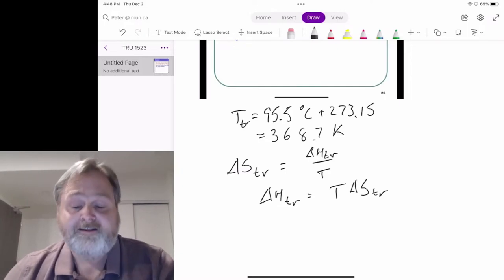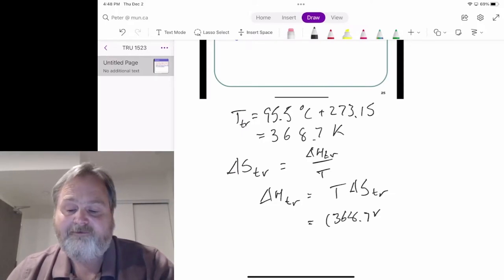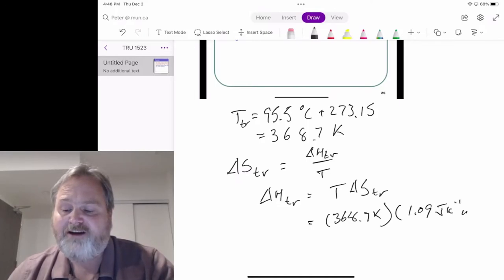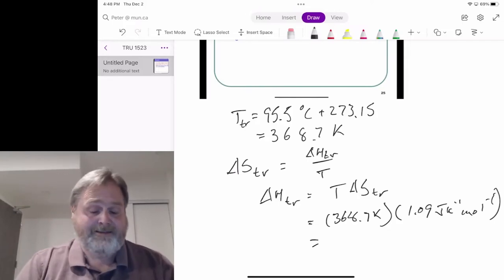But for now, let's just solve the problem. That is going to be our 368.7 kelvin. Multiplied by the 1.09 joules per kelvin per mole for the entropy change for that transition. Again, really small, expecting a very, very small answer in this case.